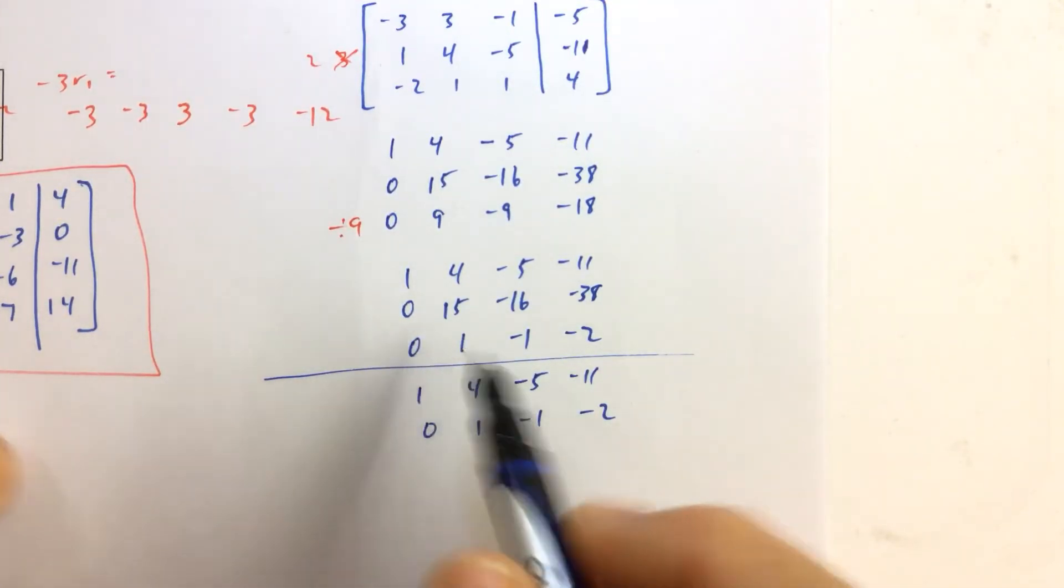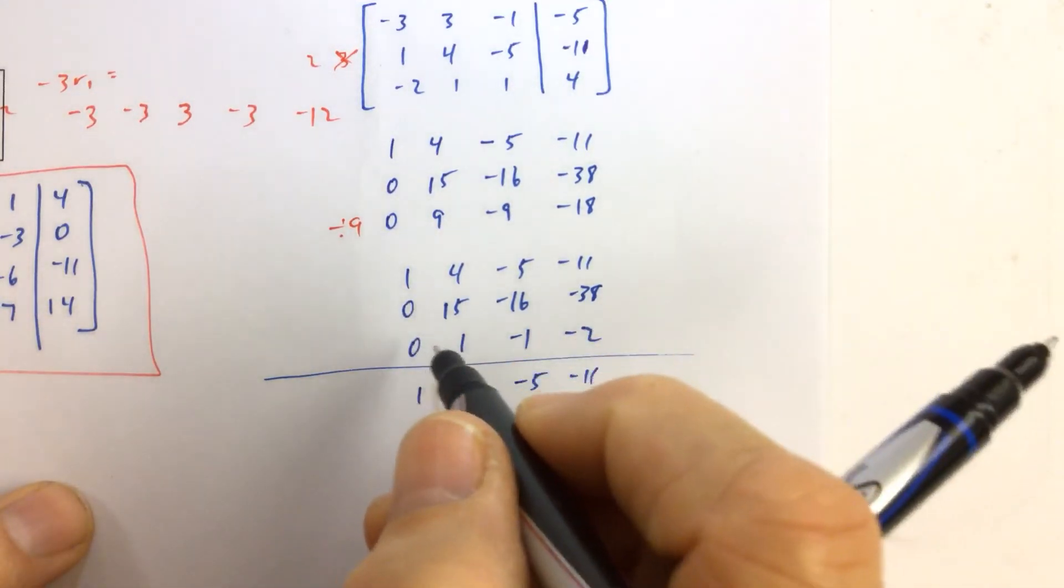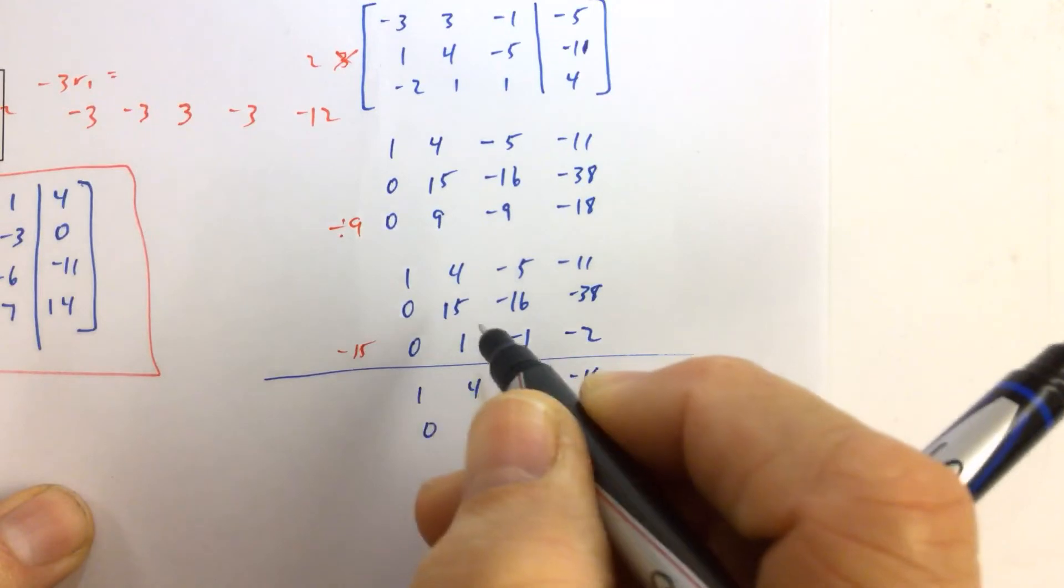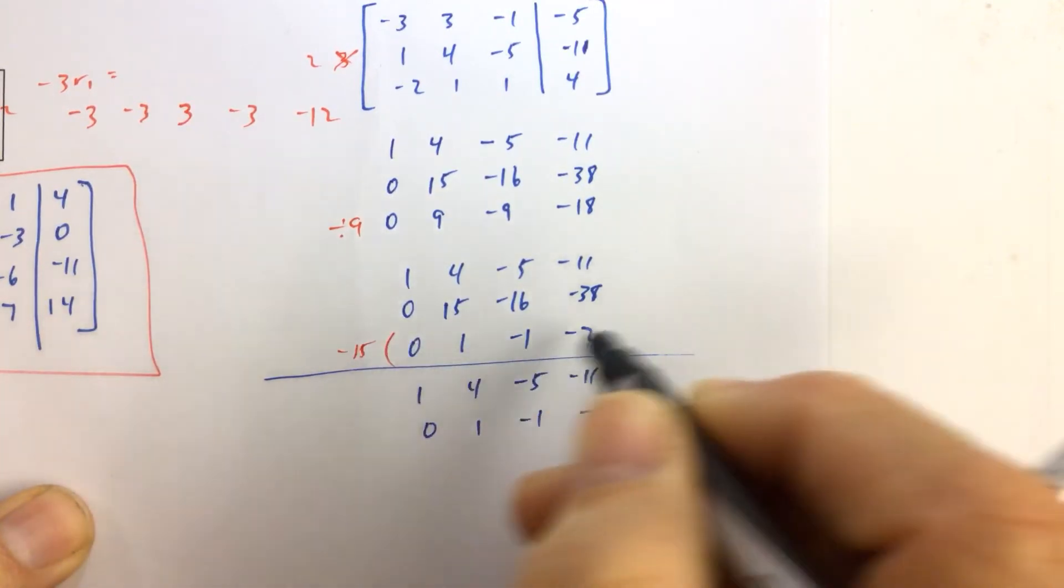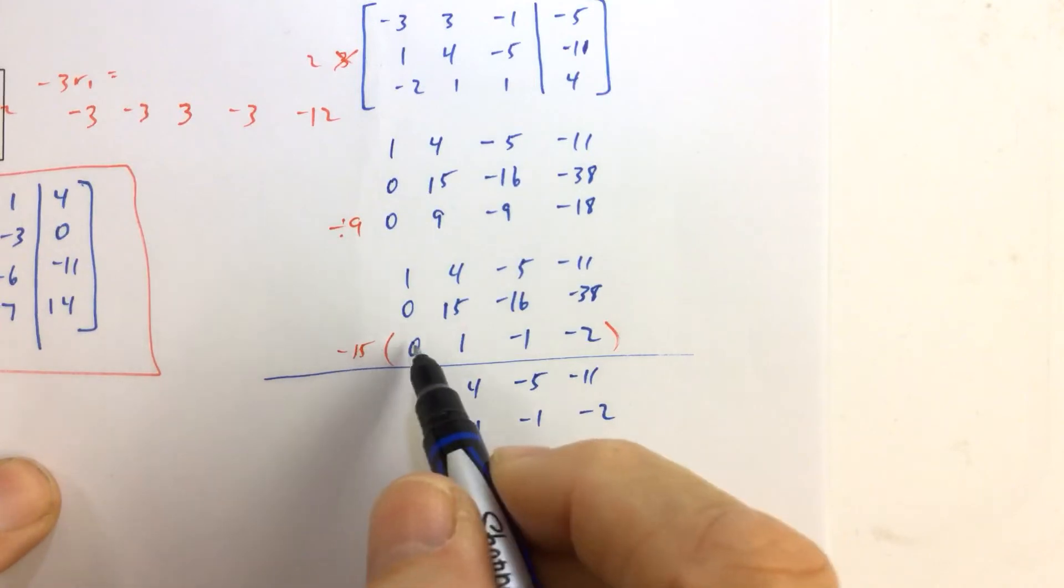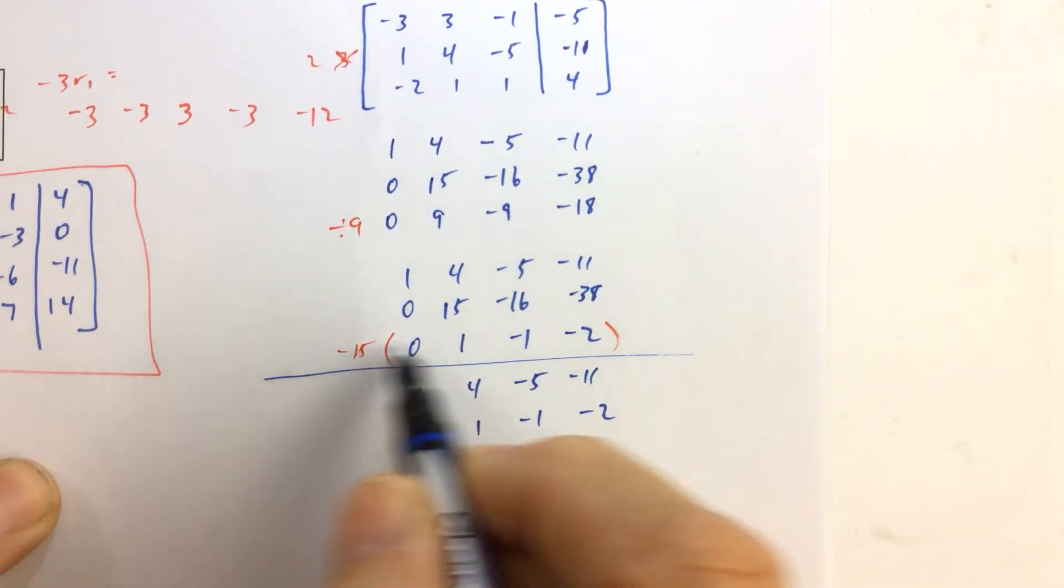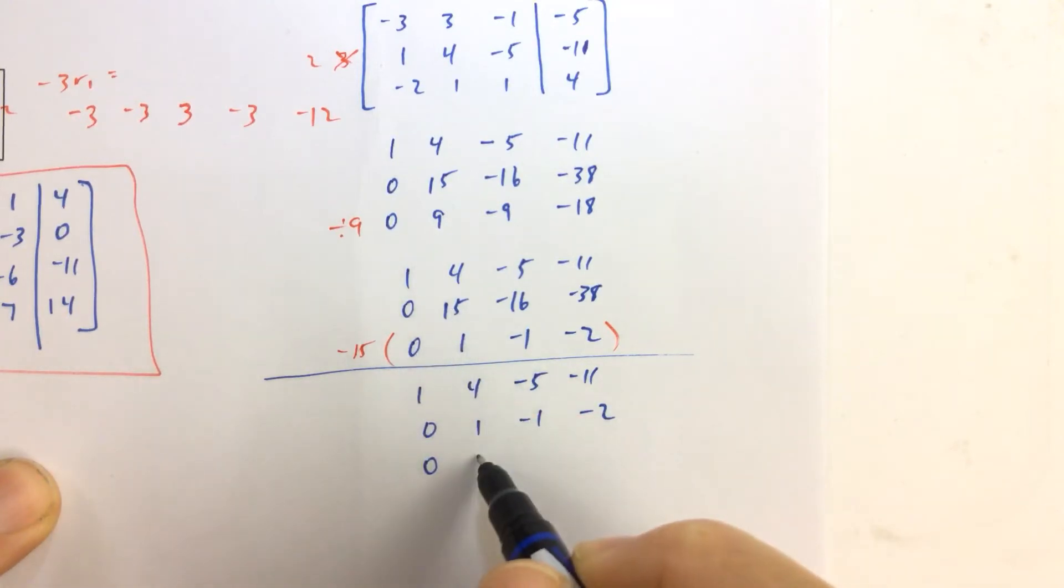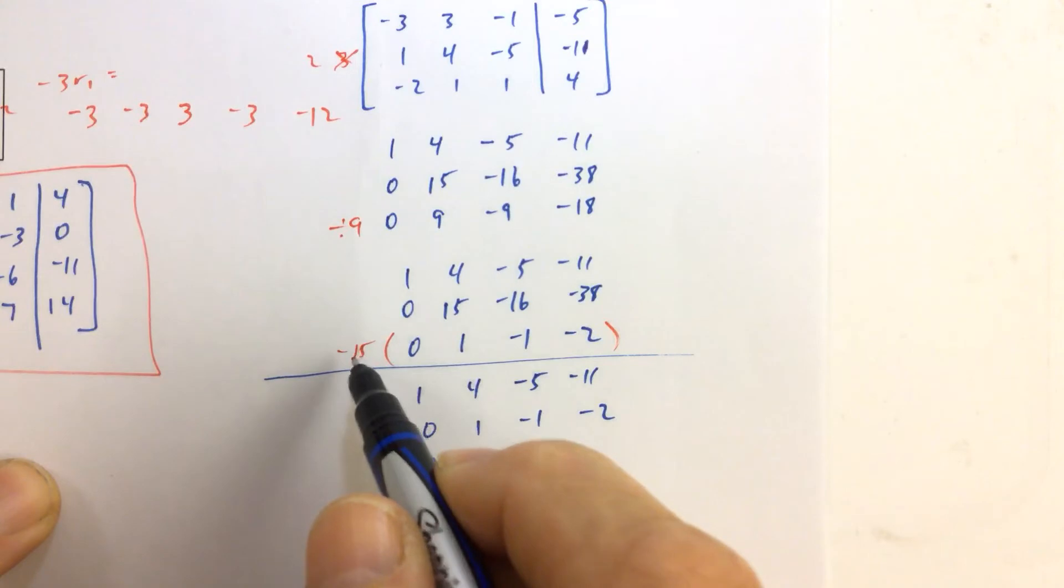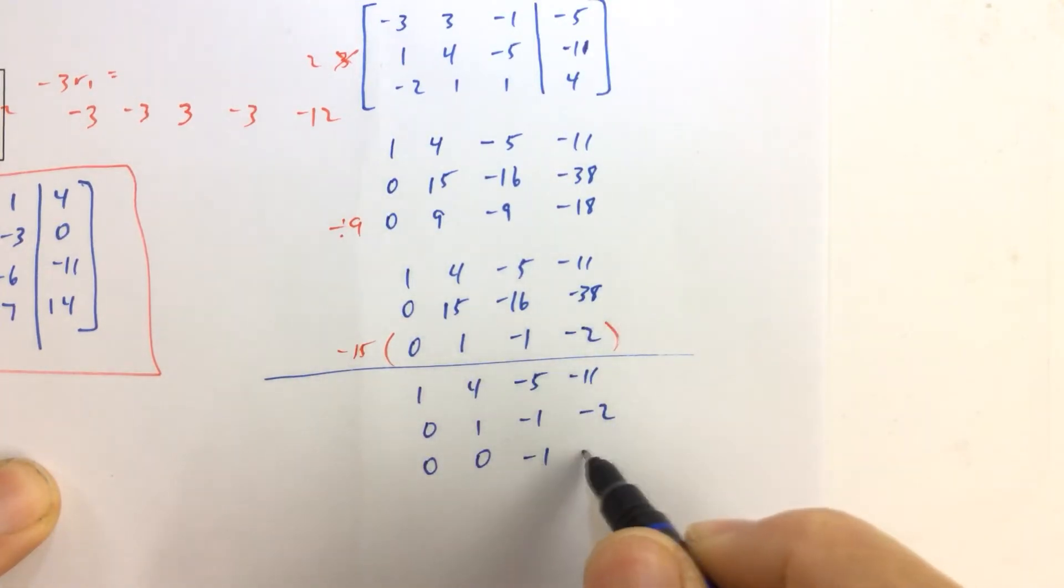And then, our third row now is going to become, I'm going to multiply this row here by negative fifteen, and add it to this row. So watch what happens. Negative fifteen times zero is zero. Zero plus zero is zero. Negative fifteen and positive fifteen, that's zero. Positive fifteen and negative sixteen is negative one. And then, thirty minus thirty-eight is negative eight.